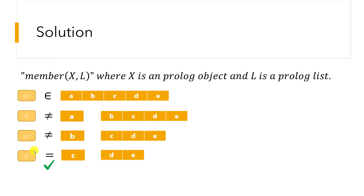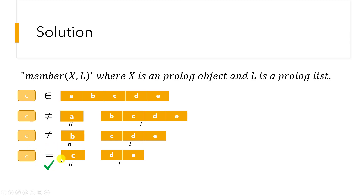Notice that each time we divided the list into a first part and the other parts — this is exactly what the pipe operator does in Prolog, dividing the list into a head and a tail. Every time we take the tail and split it again into a new head and another tail, until we find a match.